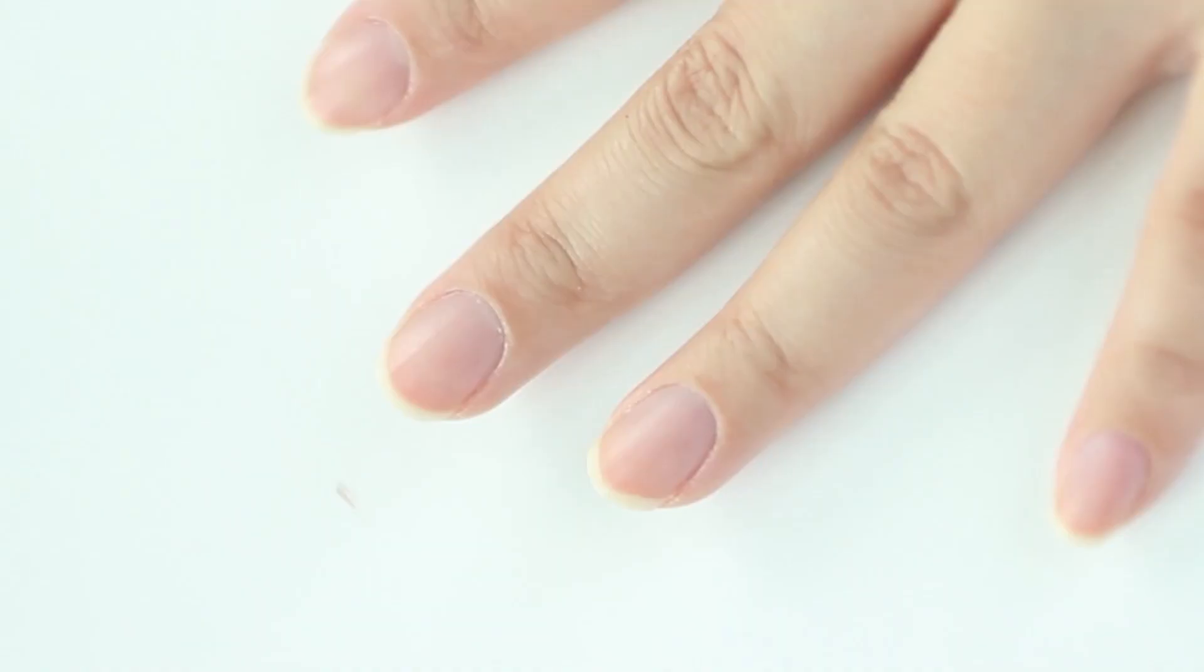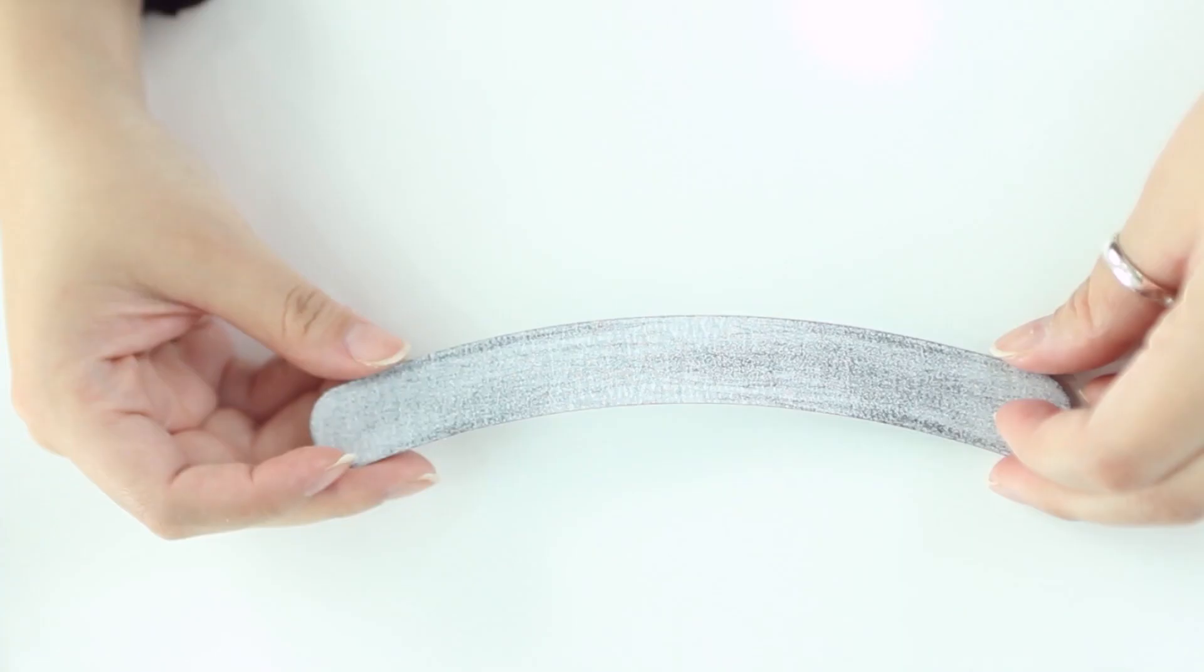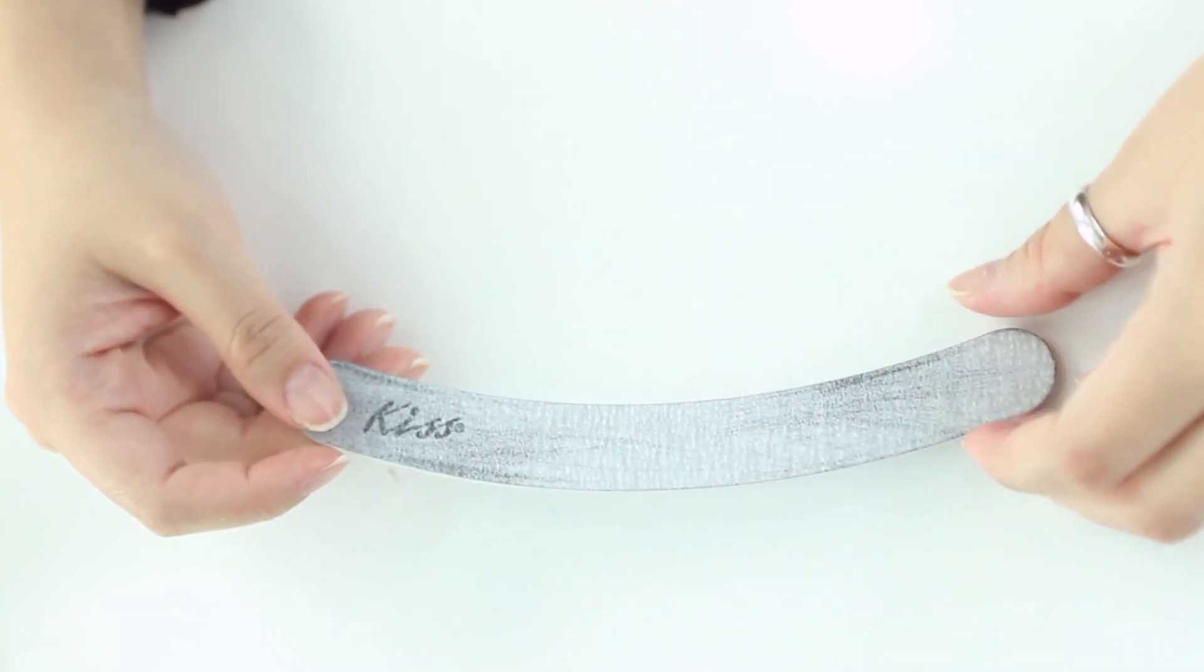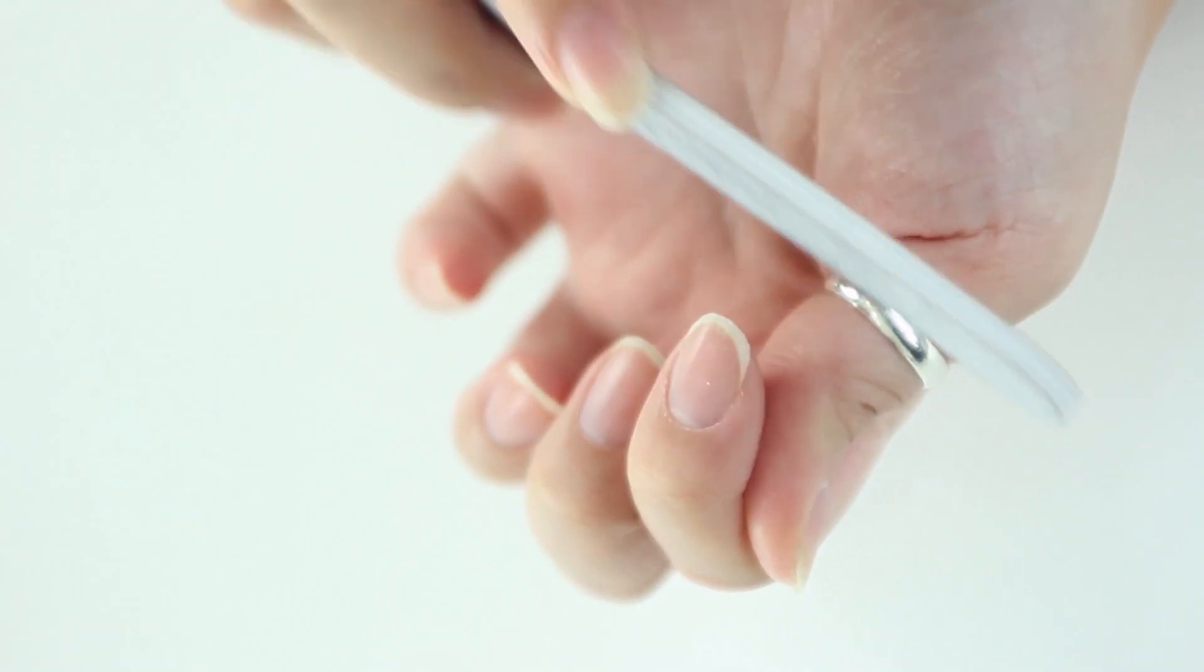After you're done clipping your nails, you want to file them. A good nail file is one that has a rough surface. You don't want to find something that's smooth. It won't file easily.